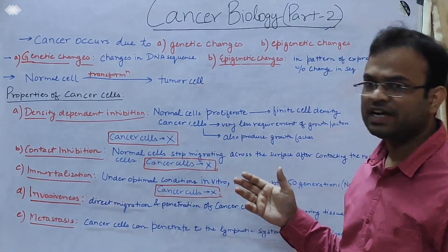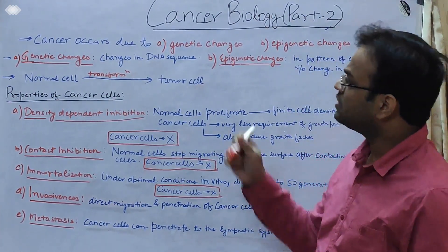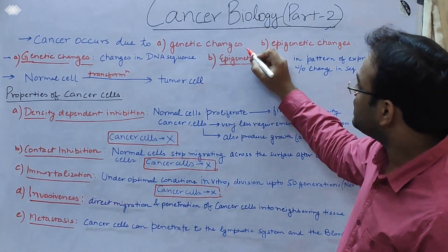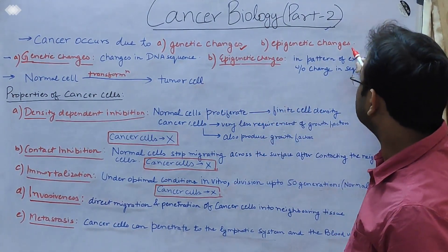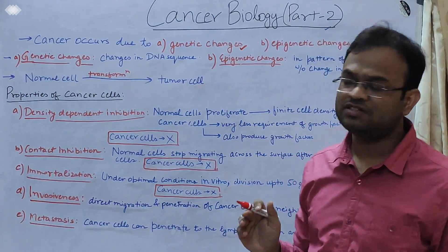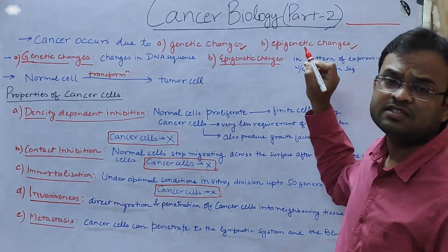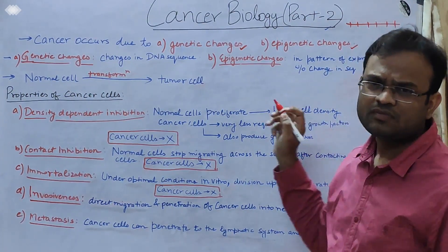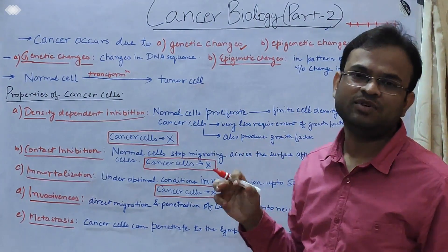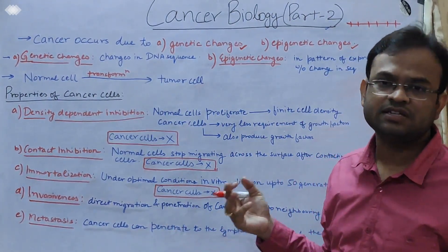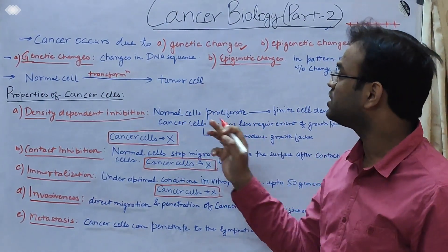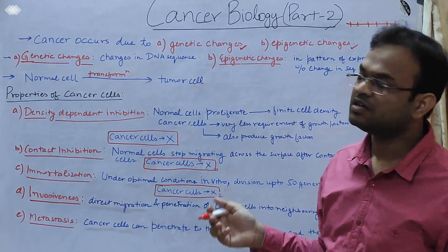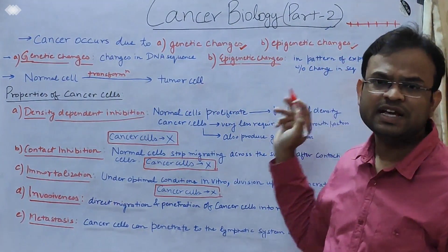In today's lecture, we will go further into the detail of cancer biology. We will describe two basic reasons responsible for the formation of cancer cells. First is the genetic changes that take place, and the second is the epigenetic changes. Regarding genetic changes, a particular gene is comprised of DNA made up of nucleotides. If a nucleotide gets mutated or any change takes place in the sequence of the DNA of a particular gene, then a genetic change has taken place, which may lead to cancer.